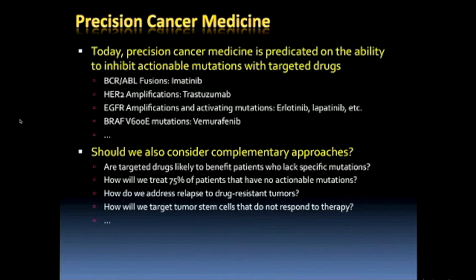Despite the excitement for genomic-based precision medicine, the reality is that most tumors — about 75% — have no actionable mutation, especially if you include genes we don't yet know how to target pharmacologically, like KRAS. What are we going to do for the patients who present with tumors that have nothing that looks targetable? We get these reports from Foundation Medicine and see absolutely nothing targetable — so what are the options? Typically chemotherapy, which is not very effective.